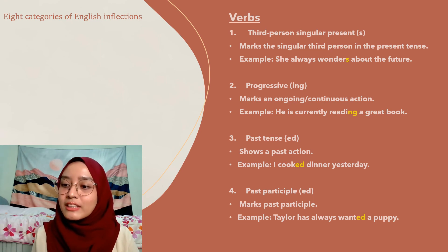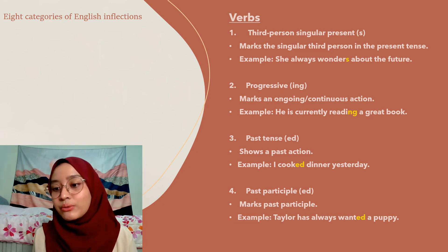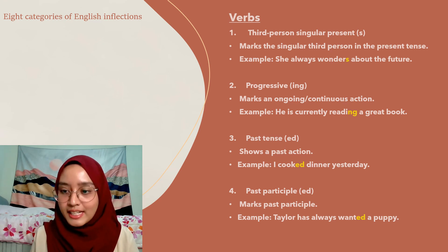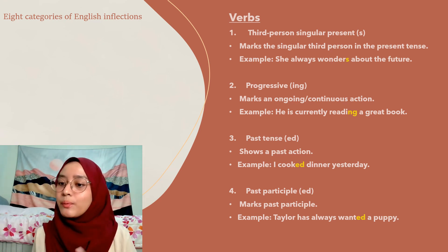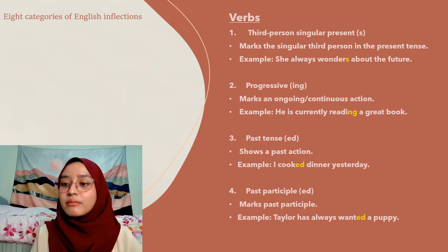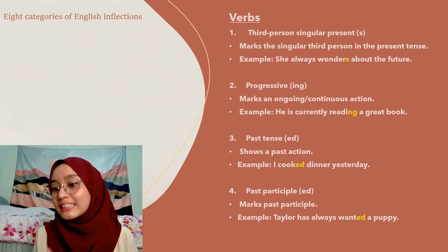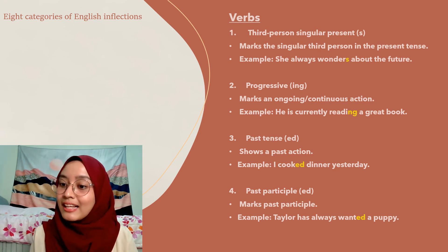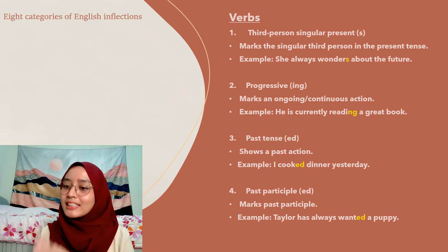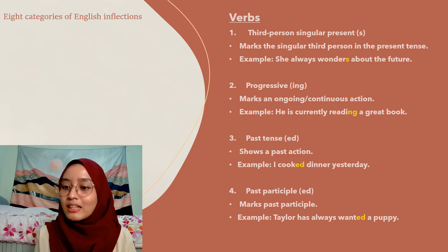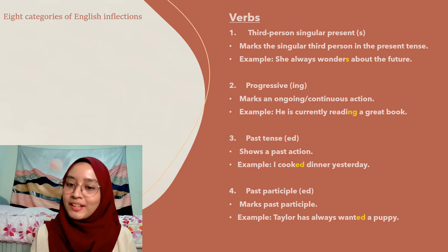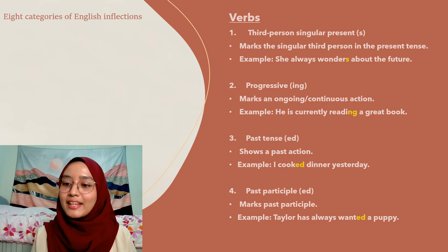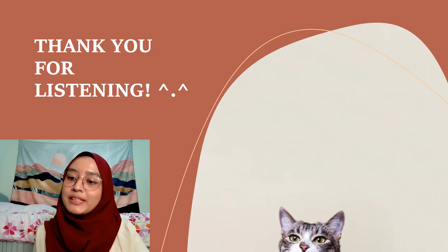The third verb inflection is past tense -ed, which marks a past action — for example: 'I baked a cake last night.' Lastly is the past participle -ed, which marks a past participle — for example: 'Taylor has always wanted a puppy.'